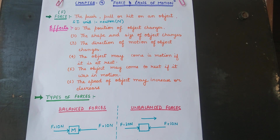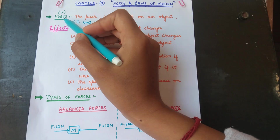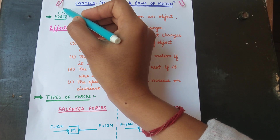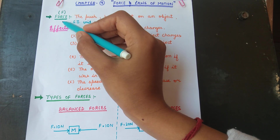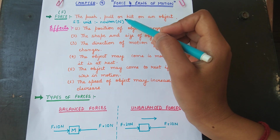Today we are going to start the new chapter, Chapter 9: Force and Laws of Motion. In this chapter we will study about force and the different laws given by Newton for motion. Force is a quantity represented by the letter F, and it is a vector quantity. The push, pull, or hit on an object is called force.